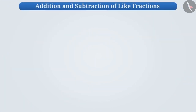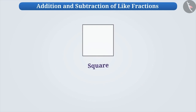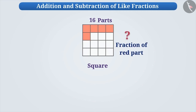First, we will learn about the addition and subtraction of like fractions. Look at this square. We have divided this square into sixteen equal parts. Out of the sixteen parts, if we fill red colour in five parts, then what will be the fraction of red part in the whole square?